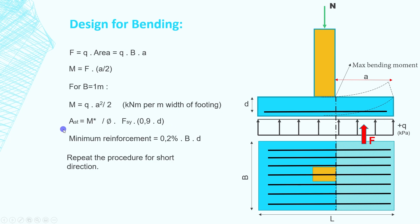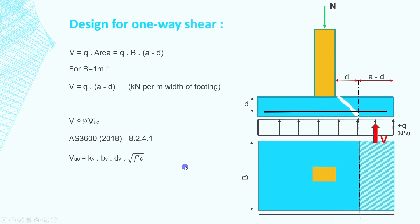You can estimate the area of reinforcement by using this simplified equation or you can use charts or spreadsheets or whatever software that you use to design single reinforced beams. Make sure you specify at least the minimum reinforcement required according to the code in the country that you live in. Then you're going to repeat the same process for the short direction if the pad's not square.